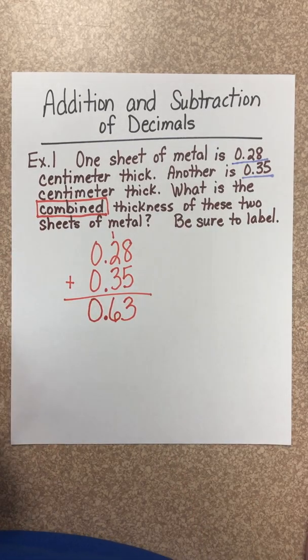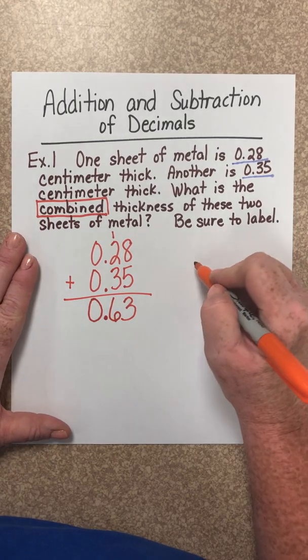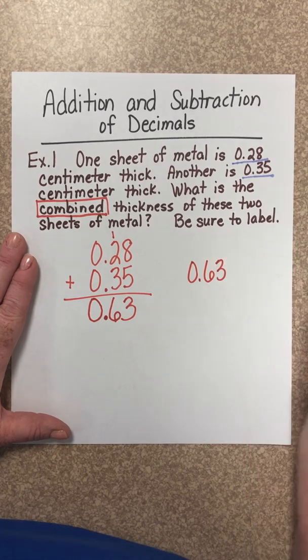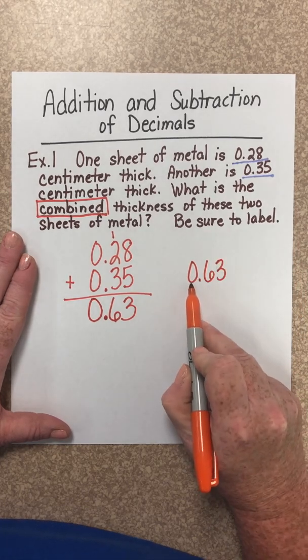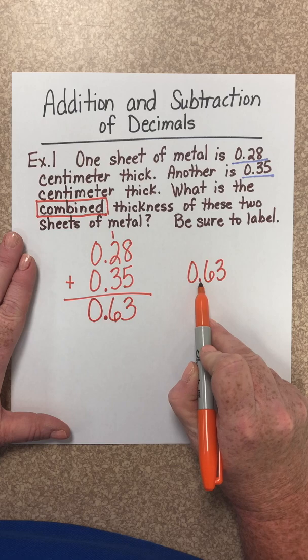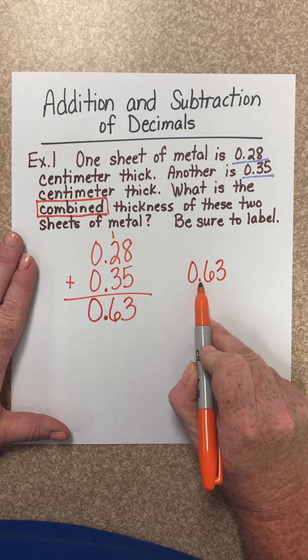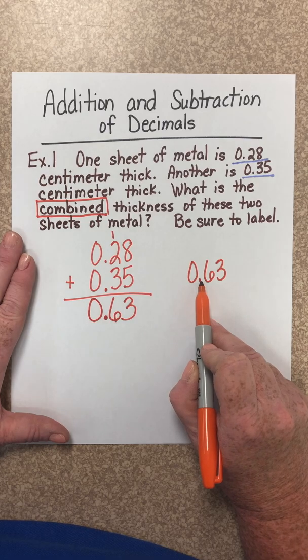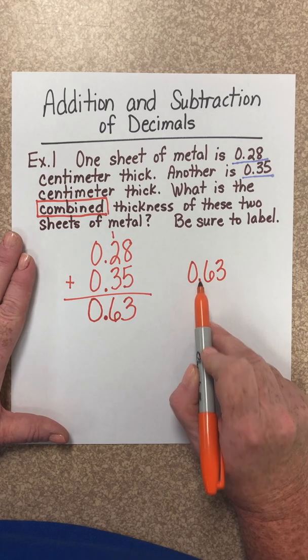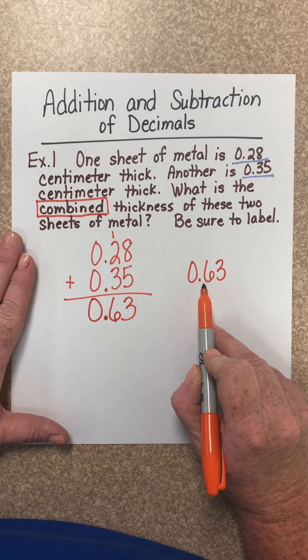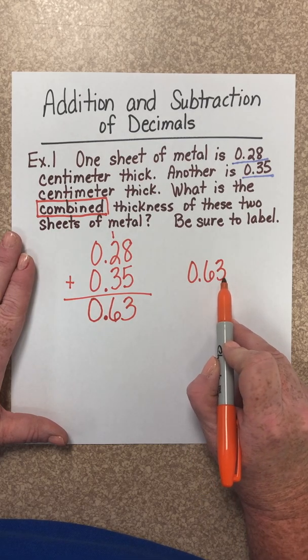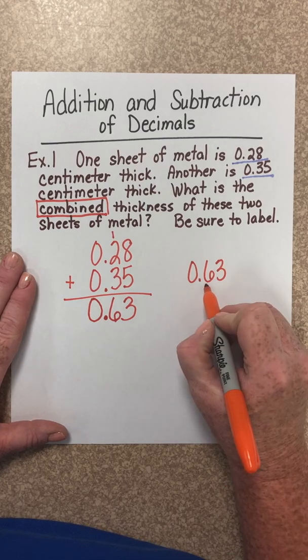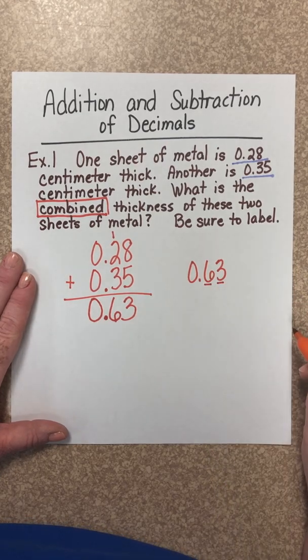Now let's write the answer. The answer is 0.63. It's real important that we put this 0 in front of the point so we know that that point is not a mistake or a smudge on our paper. We want to be careful and realize that this is a decimal answer. This decimal answer has two decimal places.